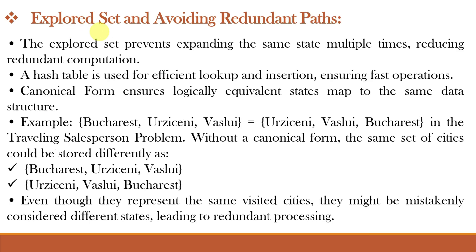Let us now discuss the explored set used to avoid redundant paths. The explored set prevents expanding the same state multiple times, reducing redundant computation. A hash table is used for efficient lookup and insertion ensuring fast operations, and a canonical form ensures that logically equivalent states map to the same data structure. For example, in problems like the traveling salesman problem, different representations of the same state must be recognized as identical. This set of cities is the same as this other set of cities, but without a canonical form, the same set of cities could be stored differently — even though they represent the same visited cities, they might mistakenly be considered different states, leading to redundant processing.